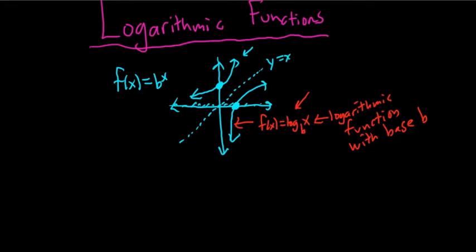So log base b of x, and we'll write it again over here, is called the logarithmic function with base b. For our purposes, b will always be bigger than 1. And whenever b is bigger than 1, the graph is going to look just like this. They'll all look roughly the same. The bigger the base, the flatter it becomes. There's one very important fact that you can get from the fact that they're inverses.